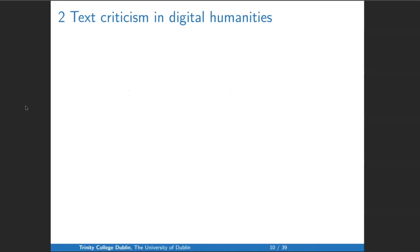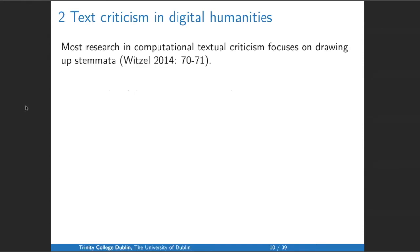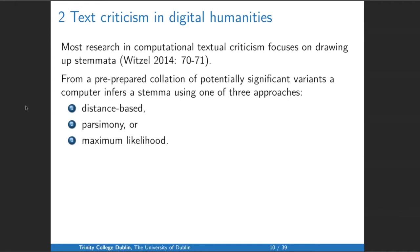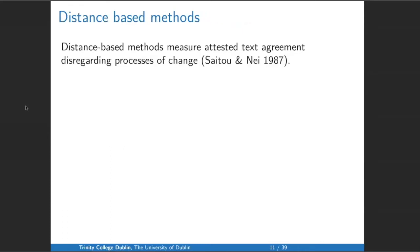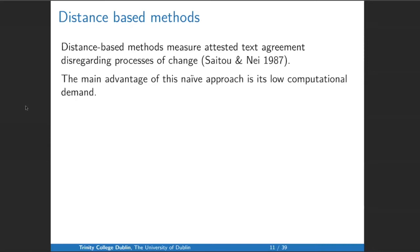So what tools does digital humanities furnish us? Most research in computational textual criticism focuses on drawing up stemmas from a pre-prepared collection of potentially significant variants. A computer infers a stemma using one of three approaches: distance-based, parsimony, or maximal likelihood. Distance-based methods measure textual disagreement disregarding processes of change — basically, how many letters are different in two versions. The main advantage is that it's computationally easy and quick for the computer, but it's a pretty naive approach that doesn't have much to recommend it.